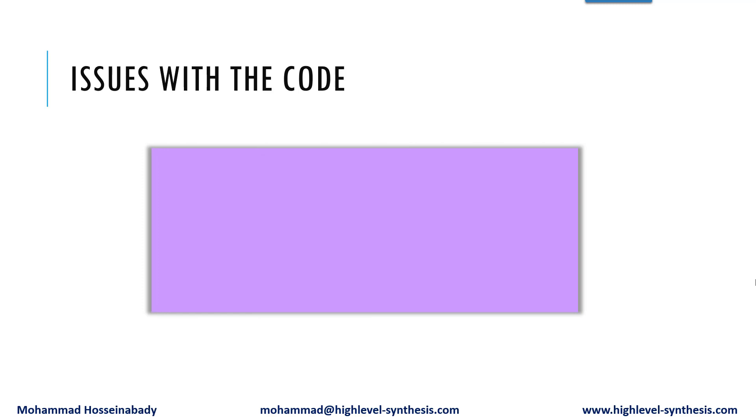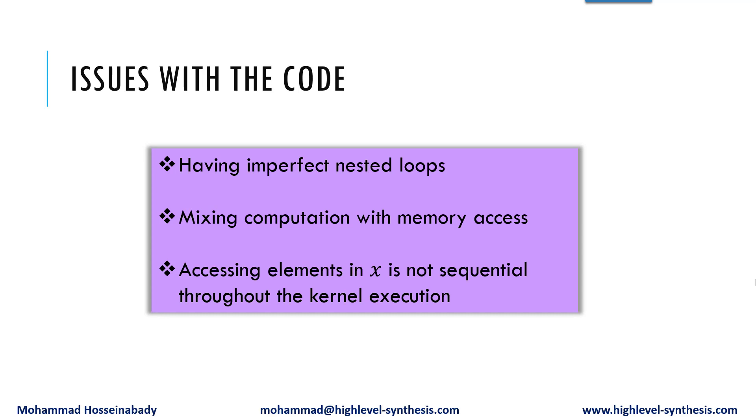What are the problems in the previous code? There are three main issues: having an imperfect loop nest, mixing computation with memory access, and finally, accessing elements in X is not sequential throughout the kernel execution.